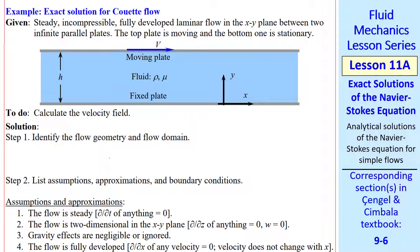The first step is to identify the flow geometry and domain. The domain is infinite in the z-direction, which is out of the page, and infinite in the x-direction. The height between the two plates is h.